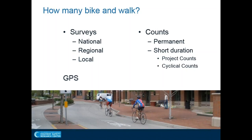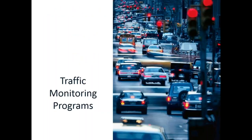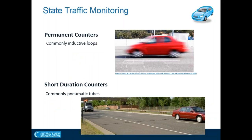There are many ways to understand bicycle and pedestrian volumes, including surveys and smartphone app trip tracing, but we'll focus on count data specifically. I'll talk about two types of counting: permanent counters — also called continuous counters — counting 365 days a year, 24 hours a day, and short duration counts, which can be as little as 15 minutes or up to months. These can be cyclical or project-based. For motor vehicles, permanent counters use inductive loops and short duration counters use pneumatic tubes placed for 24 to 48 hours.